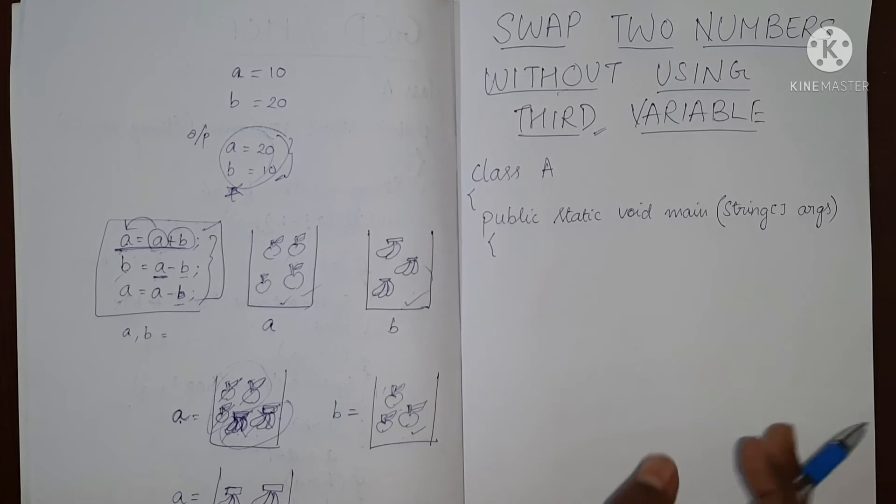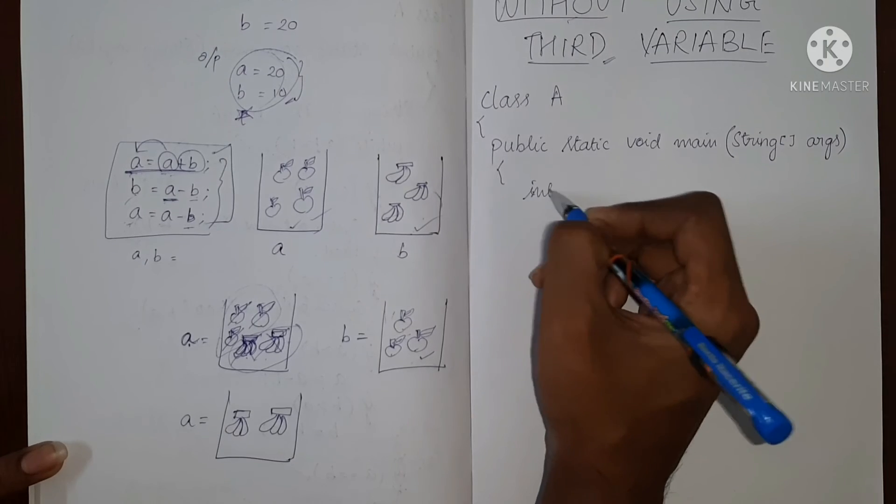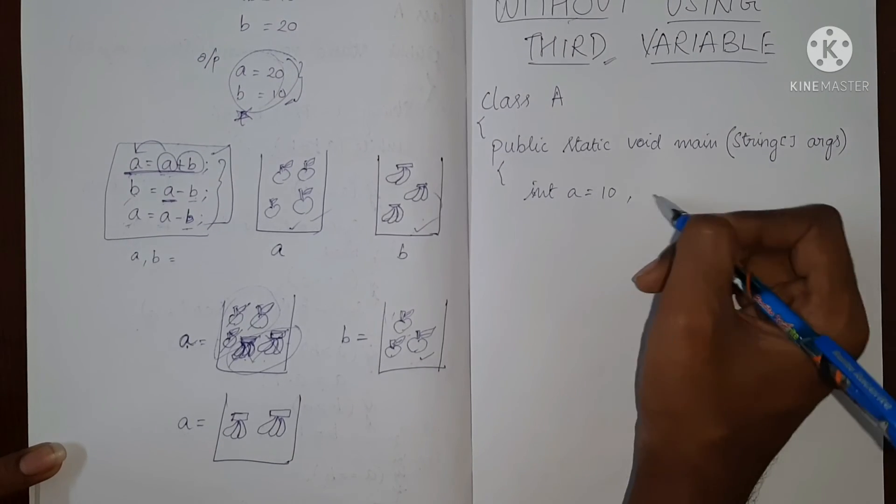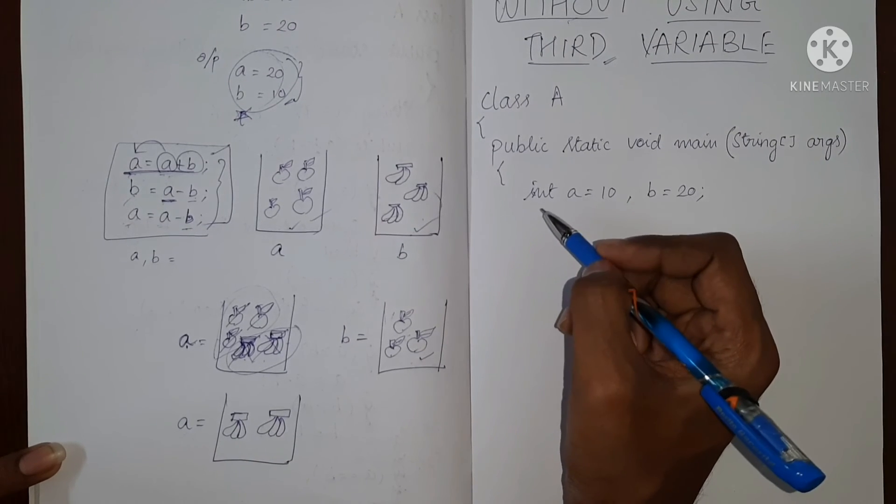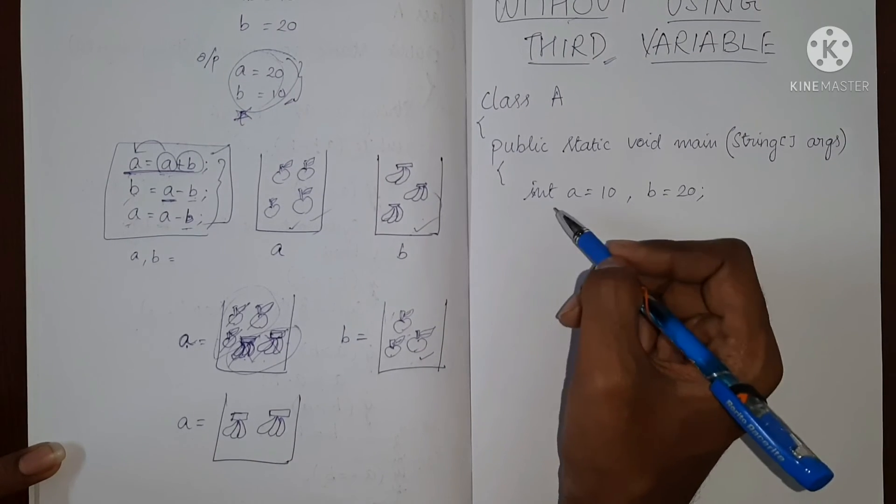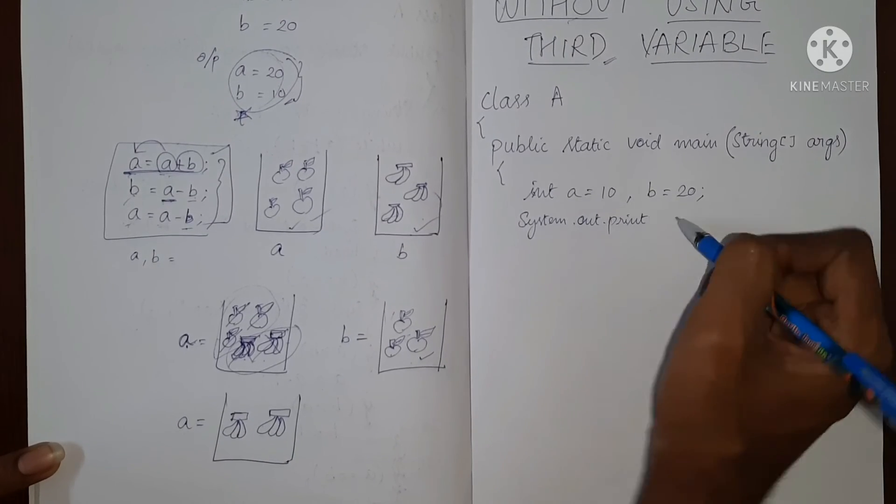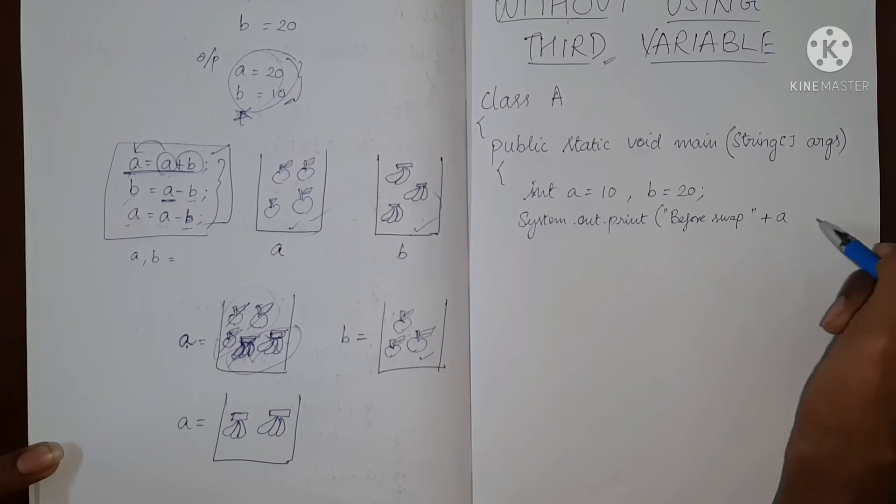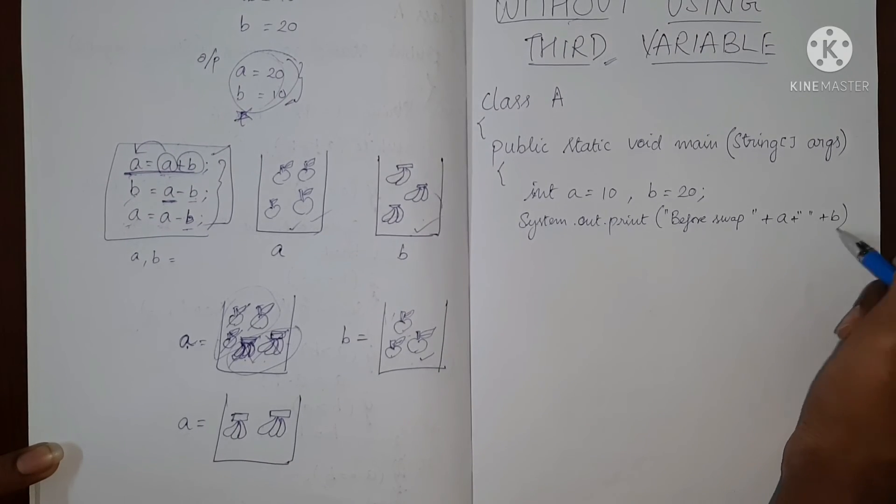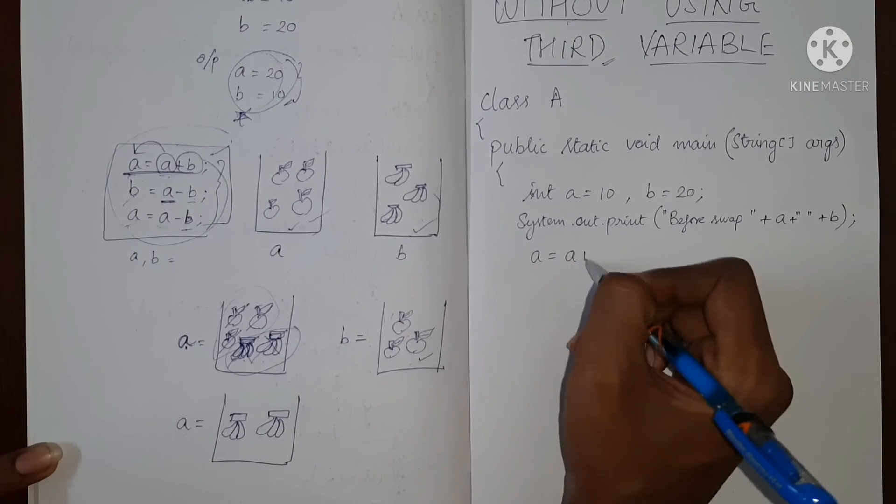So let's write the program. So we have integer a equal to 10, b as 20. So let us initially print the values. So before swap, now we will do this to swap it. Say a equal to a plus b.